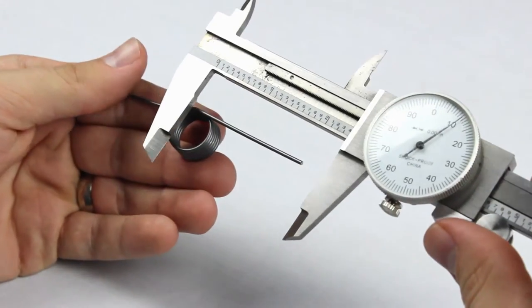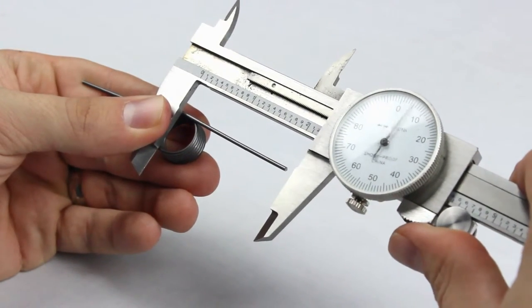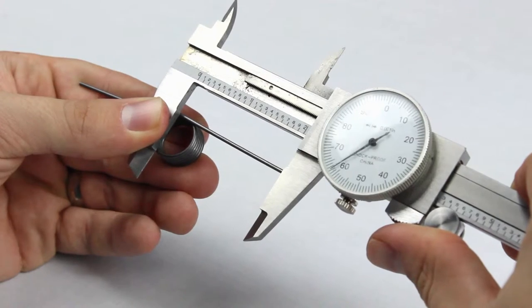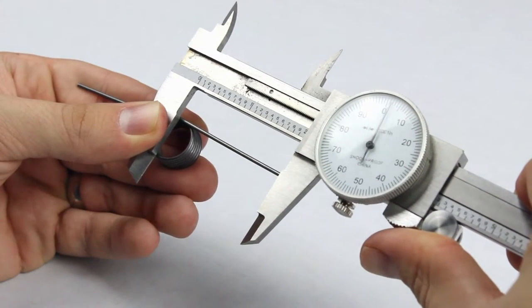Next, we'll need to measure the leg length, which is measured from the center to the end, like this. The leg length for this spring is 2 inches.